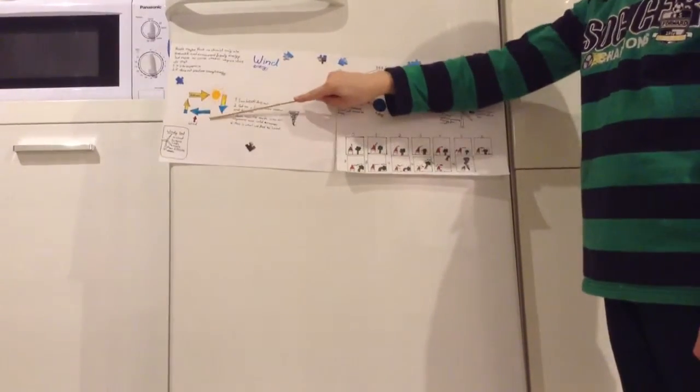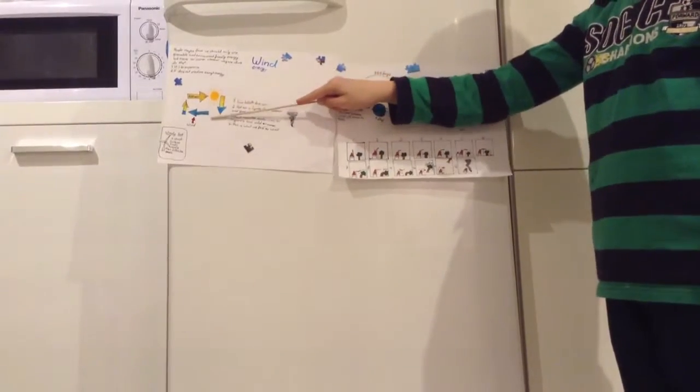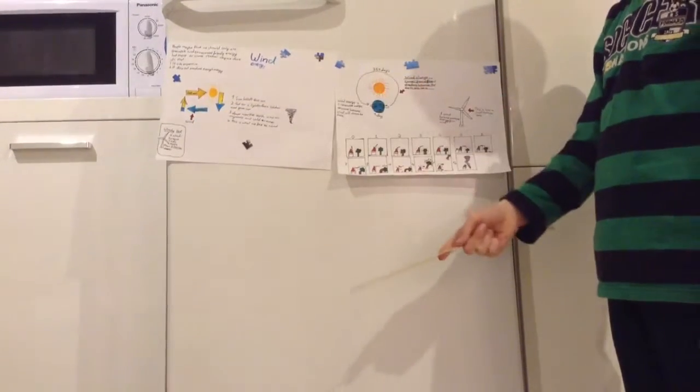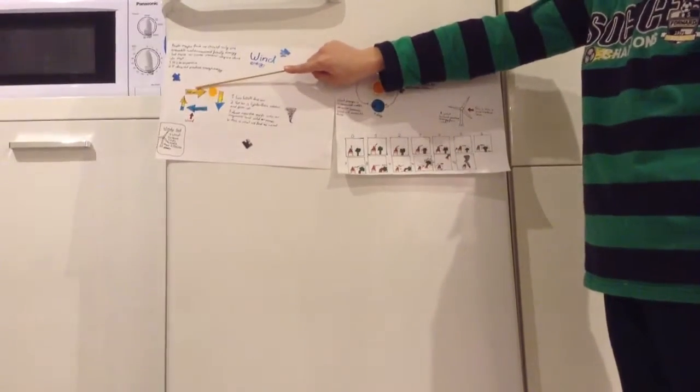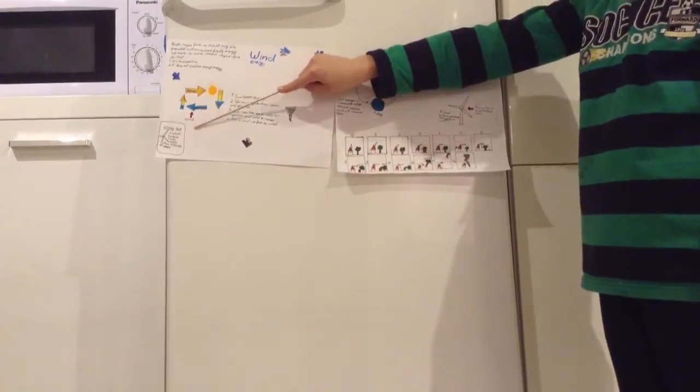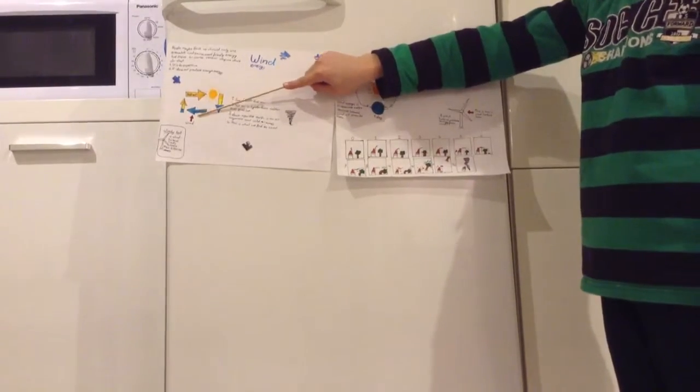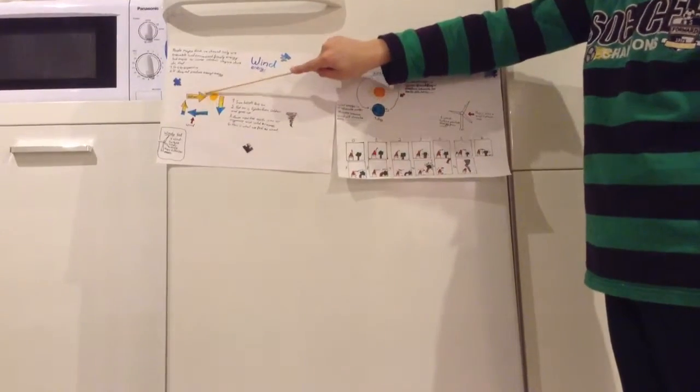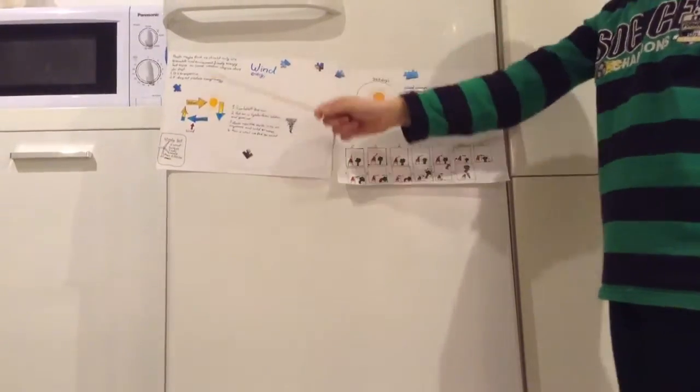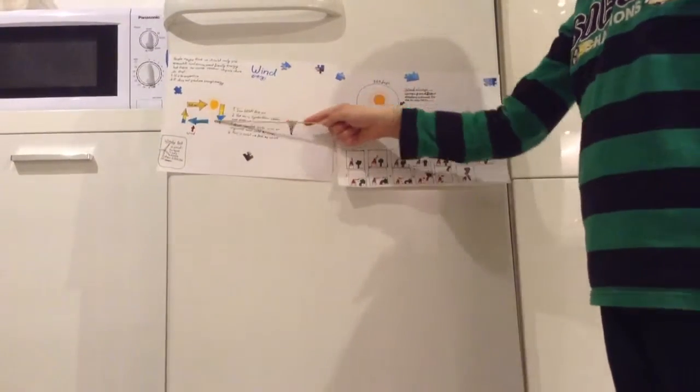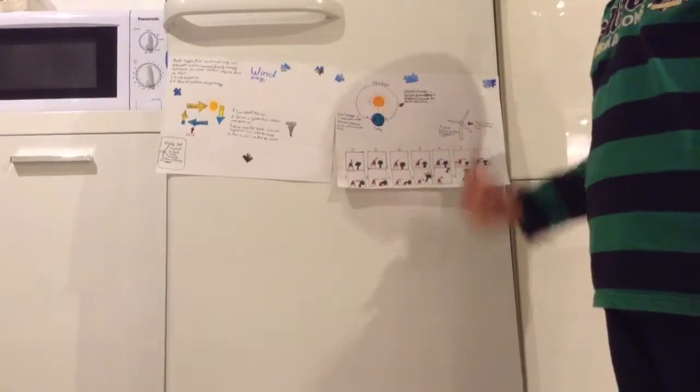Sun heats cold air, so the cold air gets hot. Hot air is lighter than cold air and rises up. Down near the earth is no air anymore because the cold air went up. This is why cold air comes again. Now, the cold air that comes is what we feel as wind.